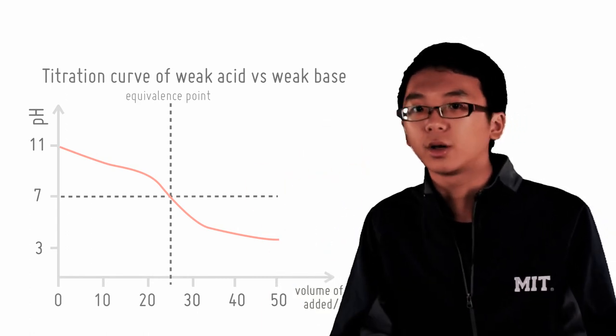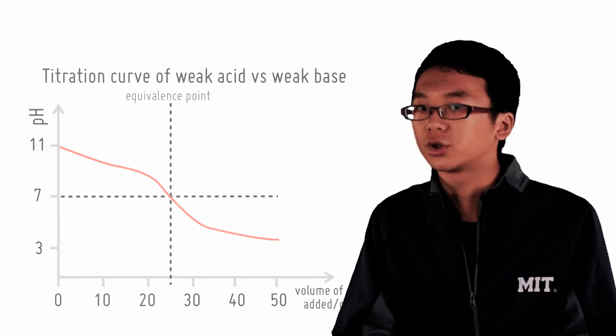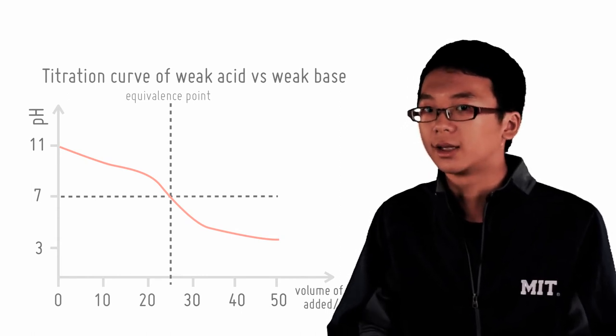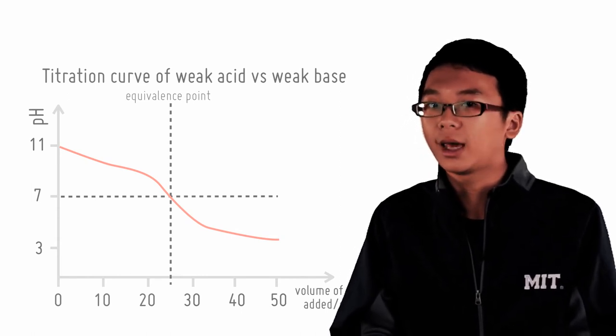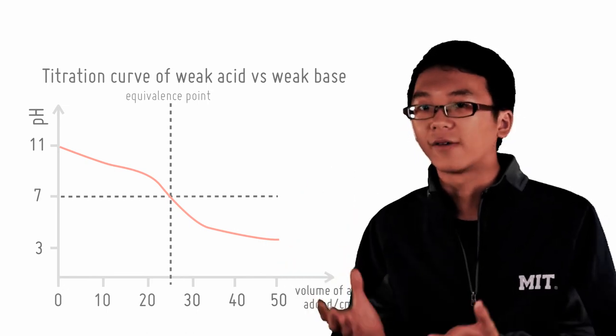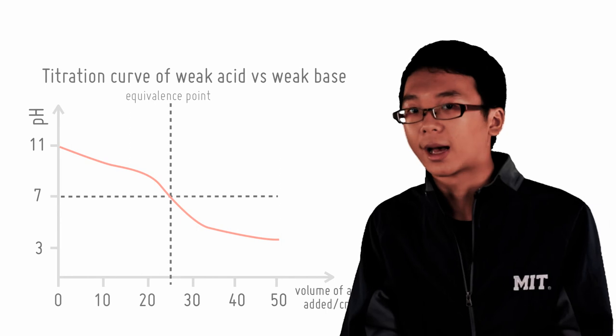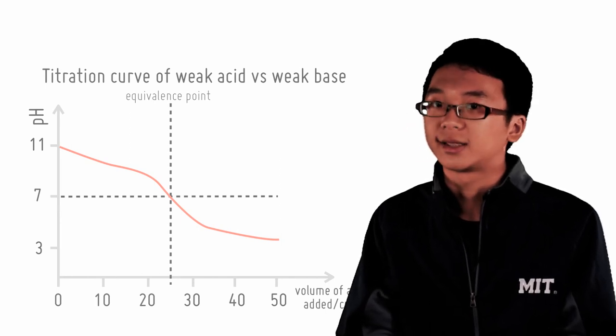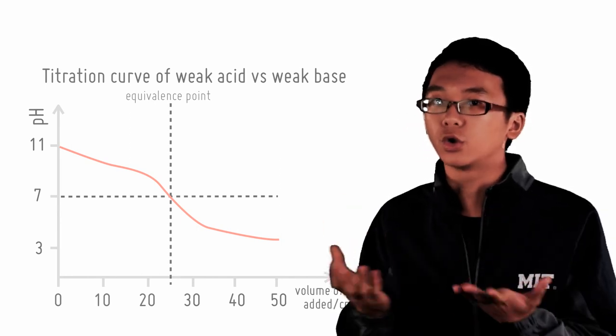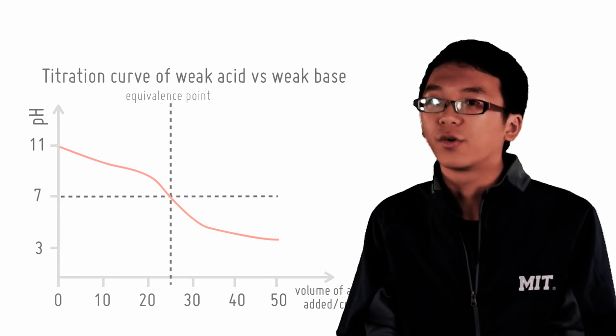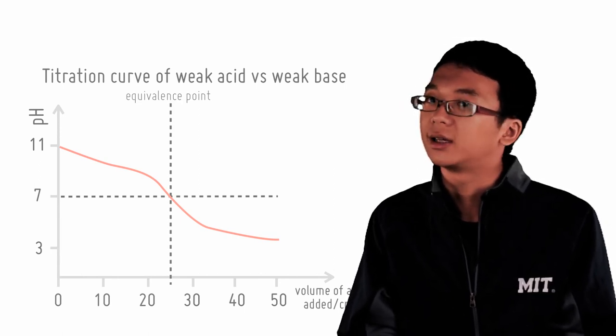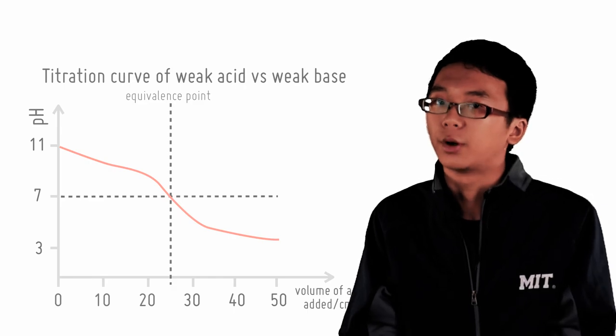So from all these titration curves, ultimately what is important is not just being able to calculate the pH at certain amounts of titrant, but also being able to explain why the graph is shaped in a certain way. Why is the equivalence point not at 7? For example, why is there a buffer formed? Always relate everything you know back to the strength of acids and bases. Following which, you can always talk about the dissociation constant to prove your point.